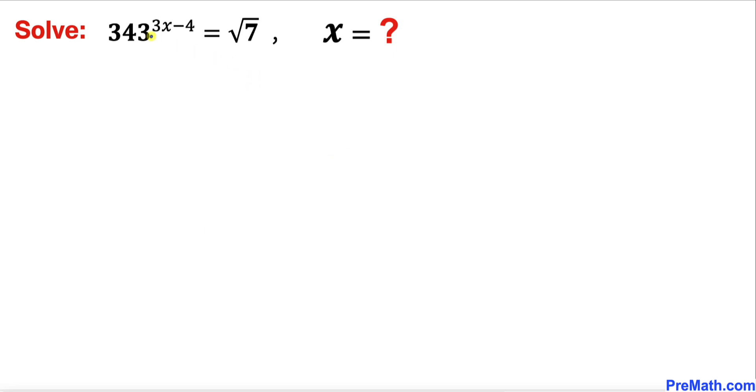We are going to focus on this base 343. This could be broken down into 7 times 7 times 7 which is equal to 7 power 3. So therefore I'm going to replace this 343 by 7 power 3.